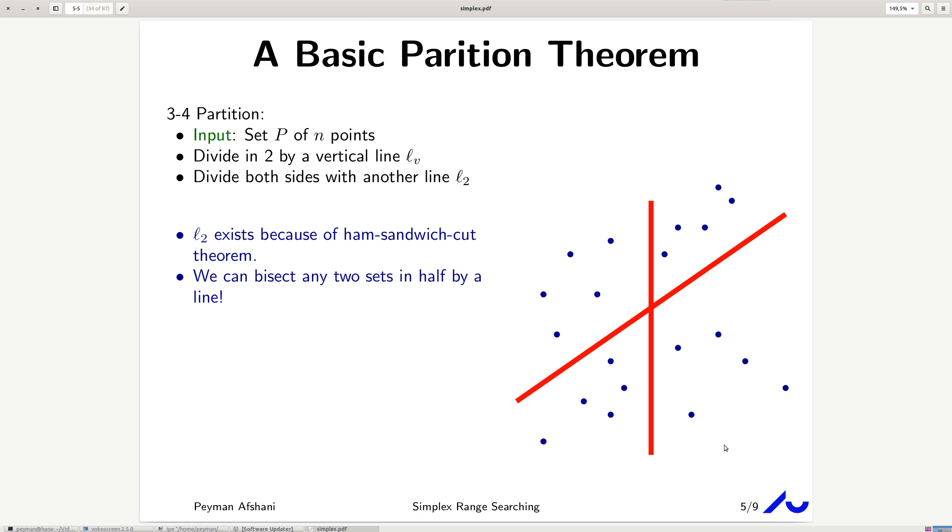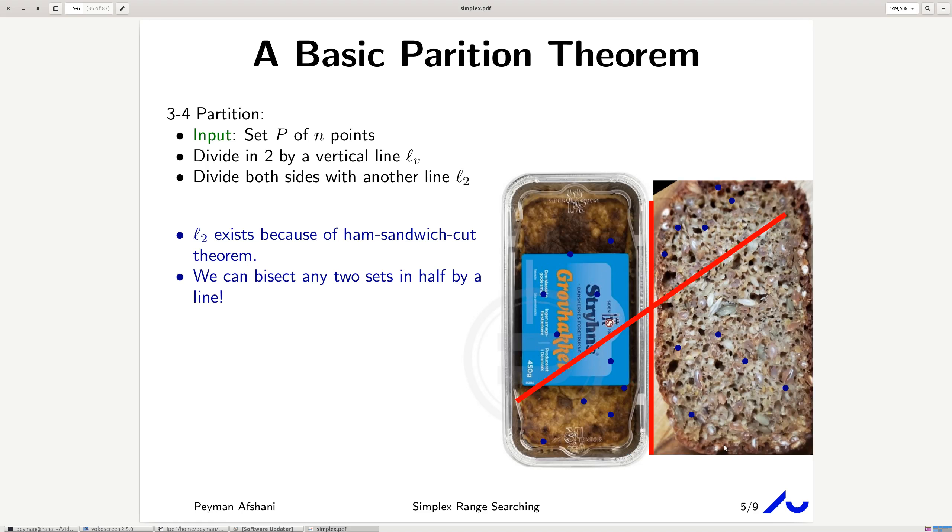Why is it called the ham sandwich cut theorem? It's because of a particular interpretation of it. In general, in d-dimensional space, if you have a subset made from, if you have d subsets, you can cut all of them in half using a line.